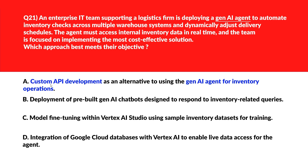We'll move to Option B. Option B says deployment of pre-built gen AI chatbots designed to respond to inventory-related queries. Pre-built chatbots lack real-time data integration for dynamic inventory updates, so Option B is incorrect.